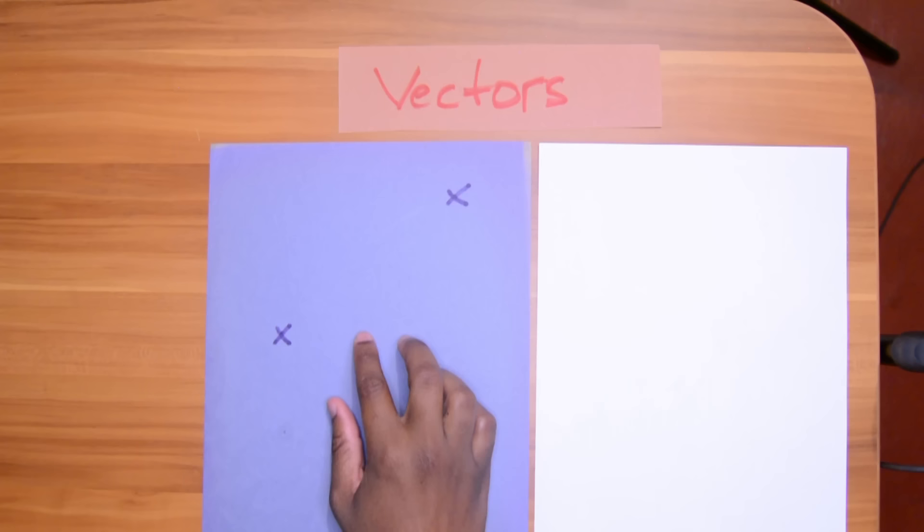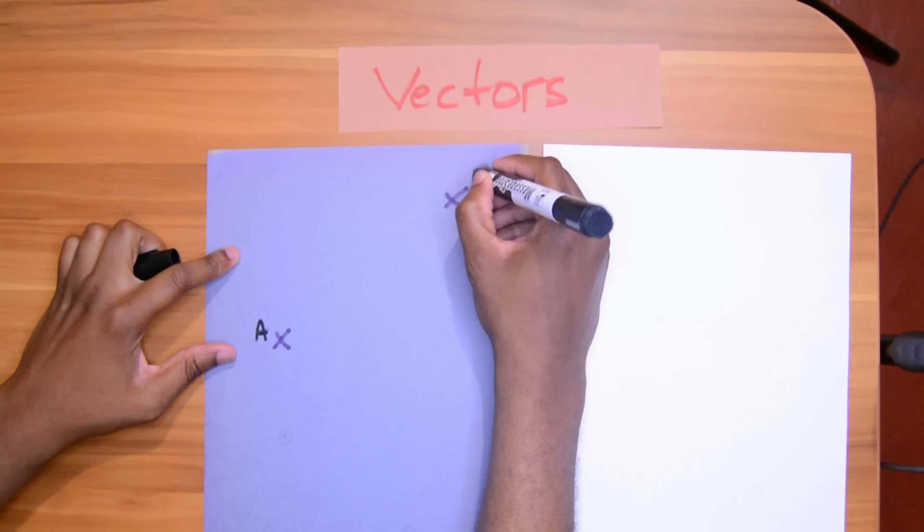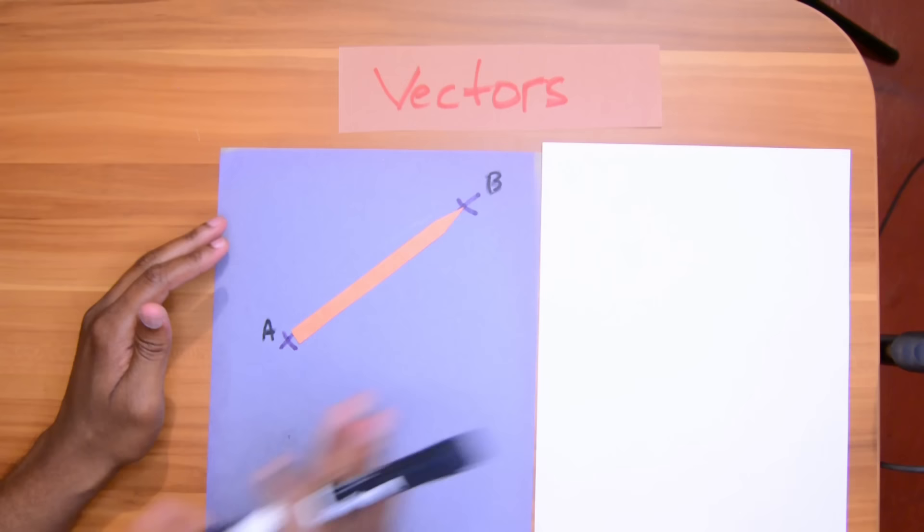Let's suppose we have two points, and I name these points A and B. Let me just darken up those points, A and B. If I want to travel along from A to B, that is a vector. So, a vector is just a directed line segment, a piece of a line in a direction from A to B.